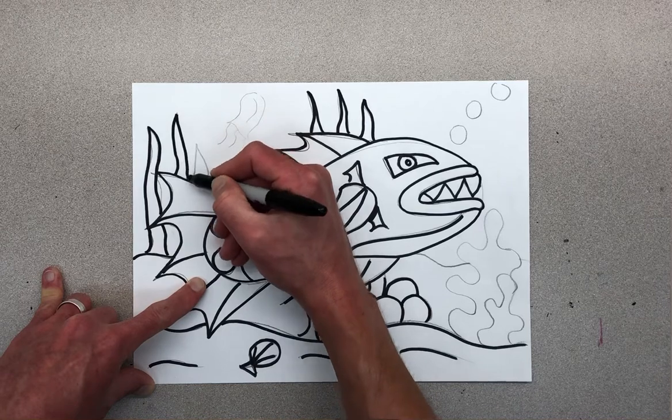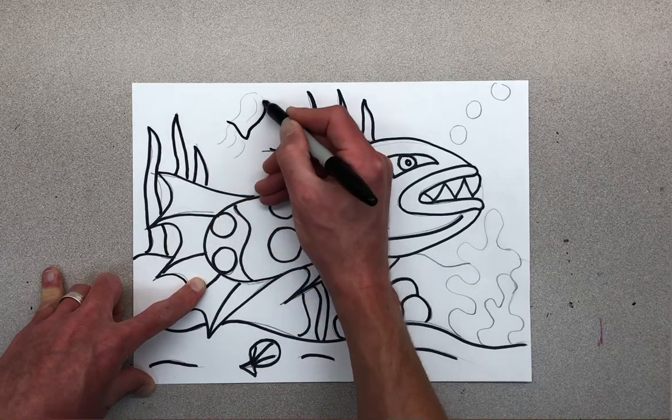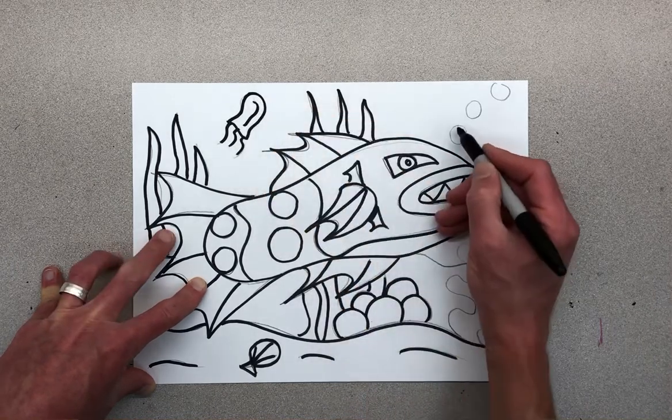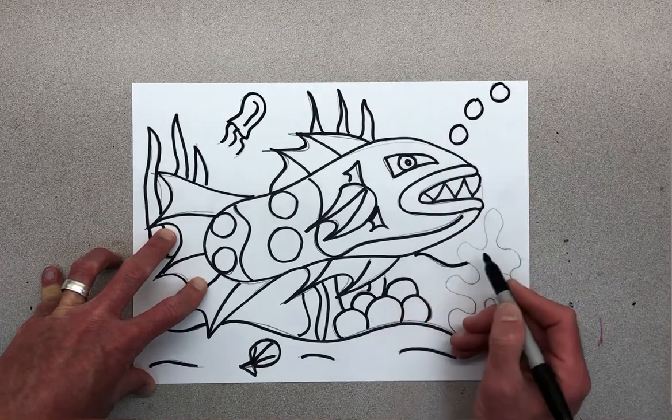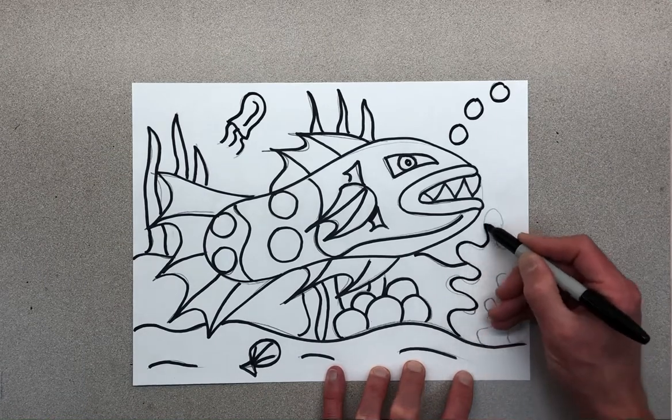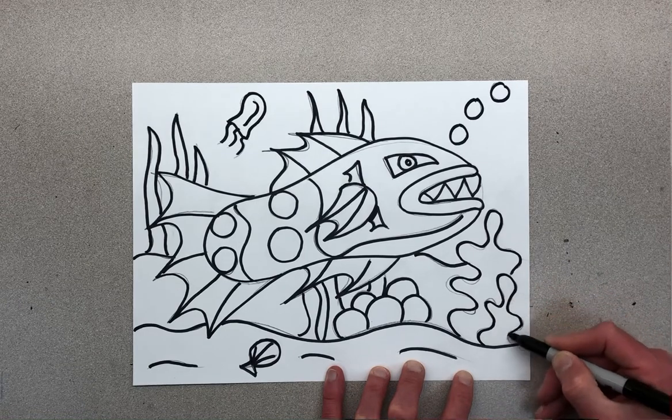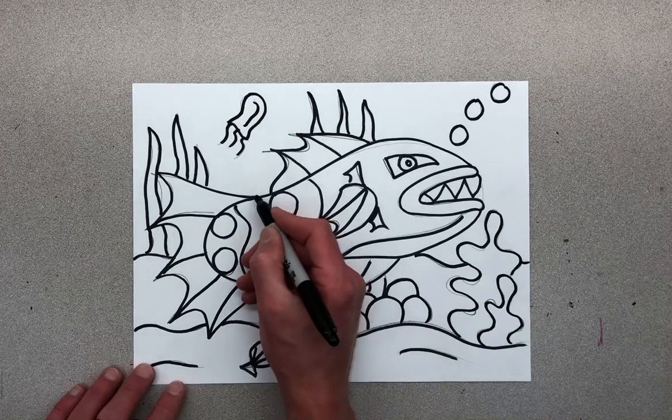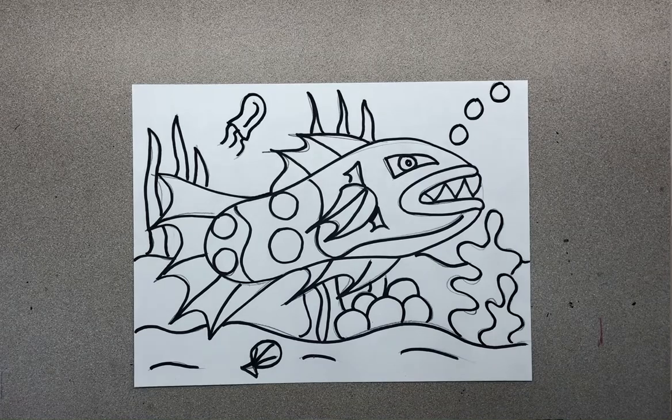So here we'll move on to the coloring part. When you're all done, I should do more erasing than this, but for this example I'm going to do it kind of quick.